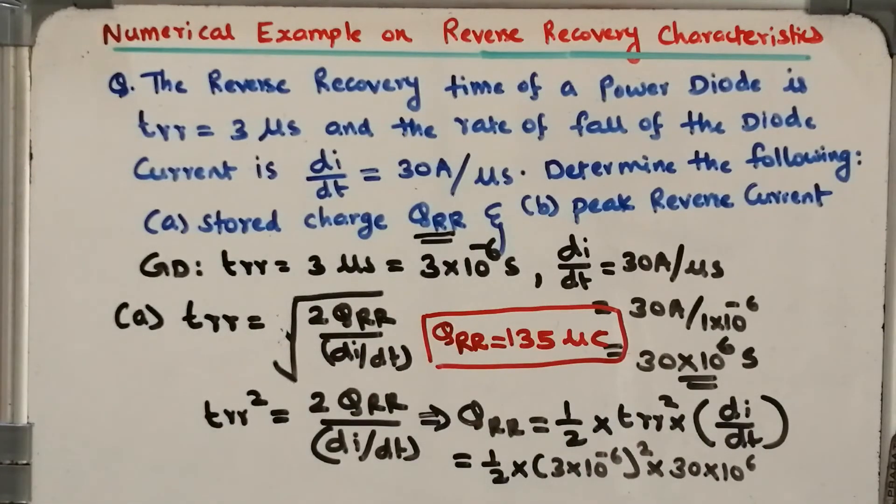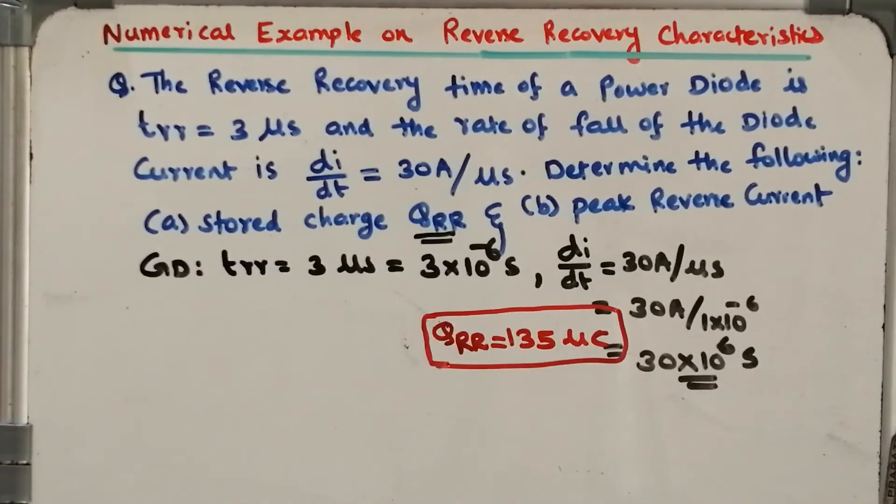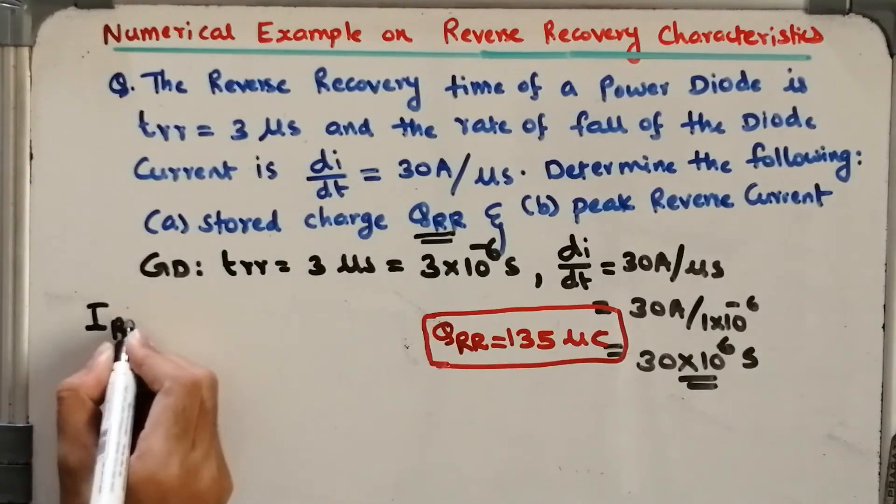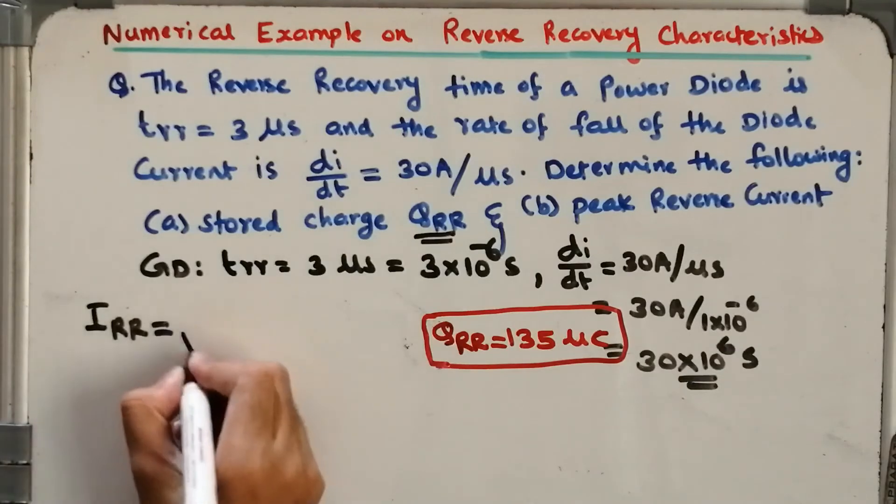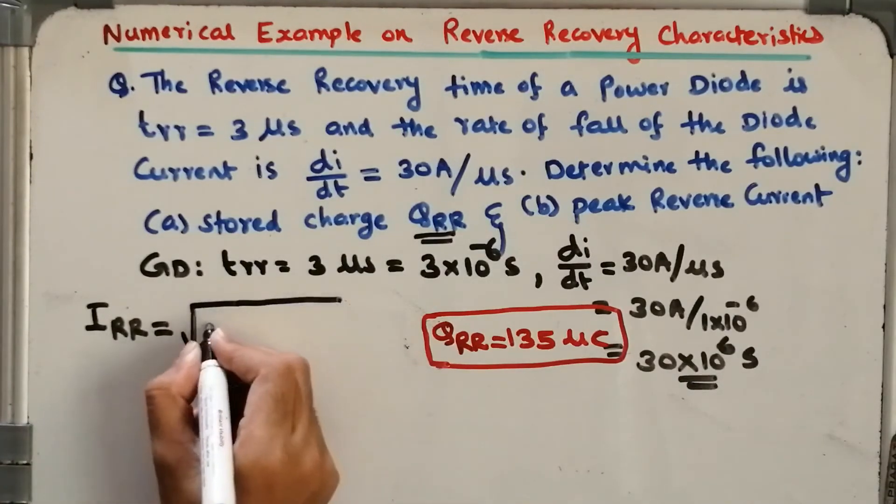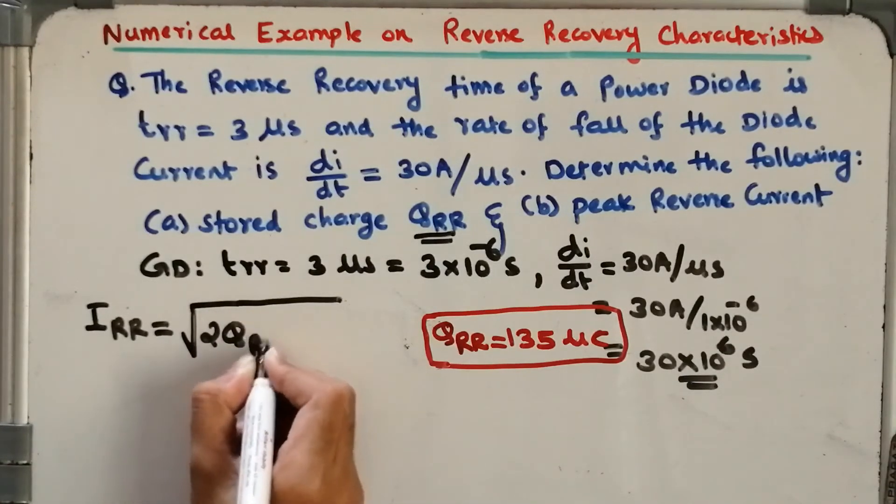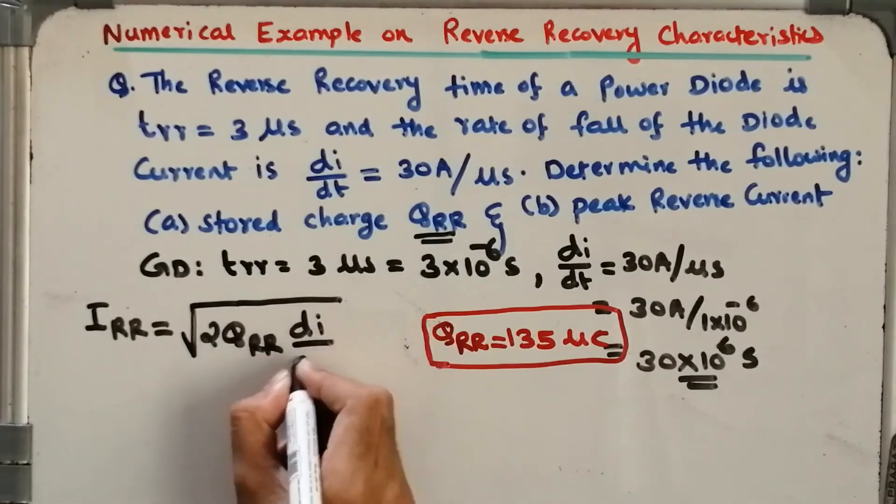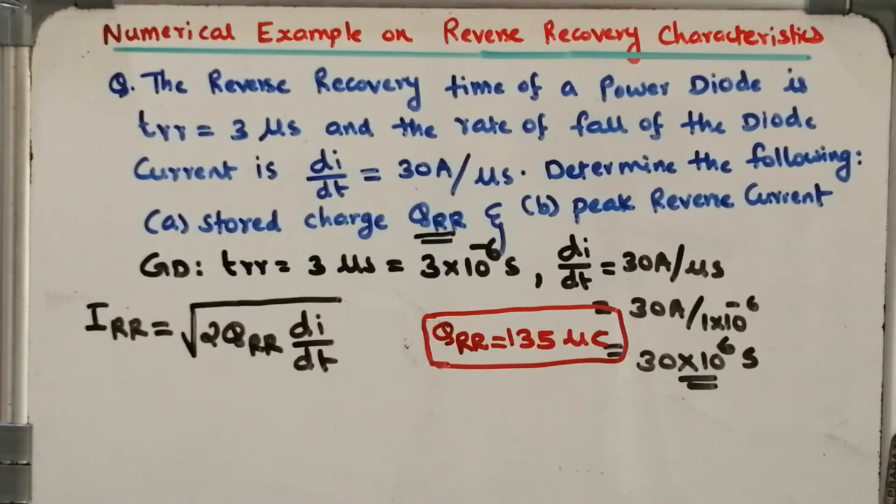Now let us move on to the computation of IRR. First, let us write the expression for IRR. We have derived an expression for IRR in the last session: that is given by square root of 2QRR times dI/dt. So substitute the values.